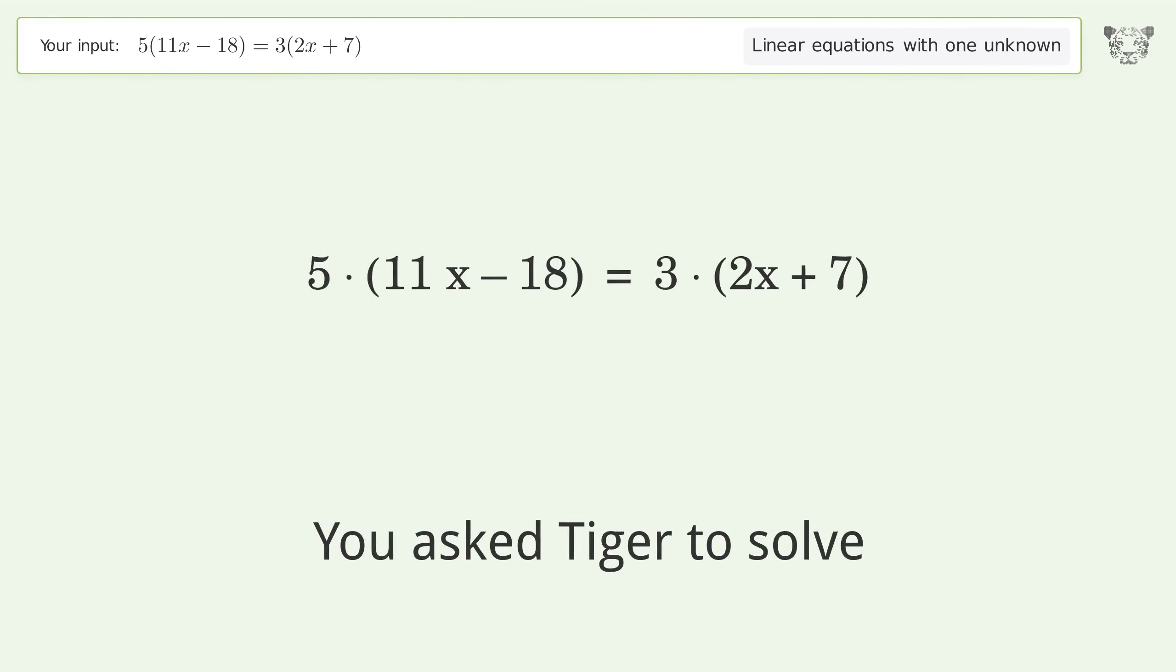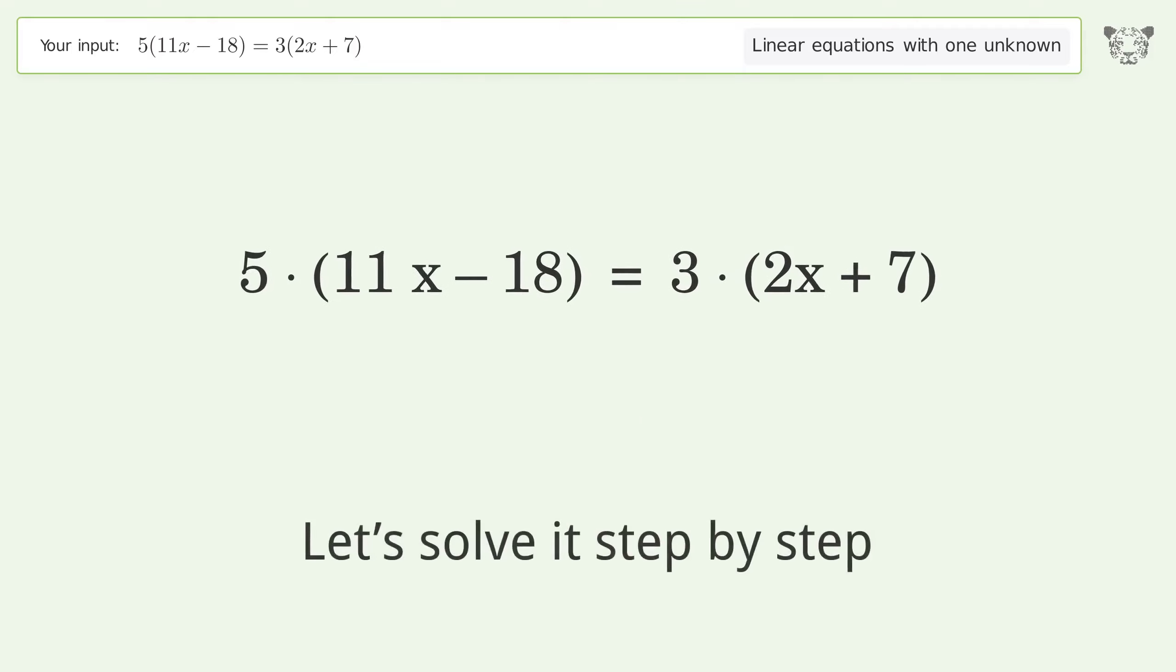You ask tiger to solve this. This deals with linear equations with one unknown. The final result is x equals 111 over 49. Let's solve it step by step. Simplify the expression, expand the parentheses.